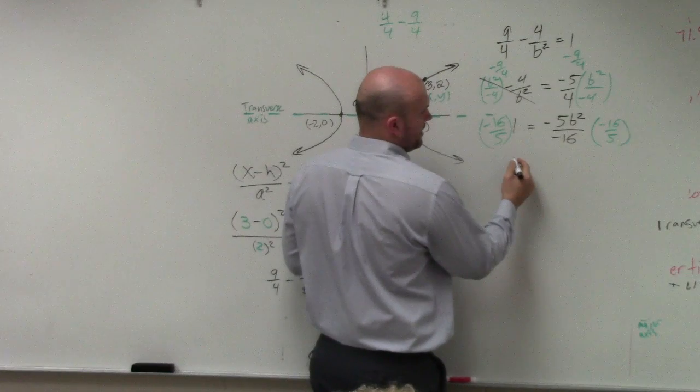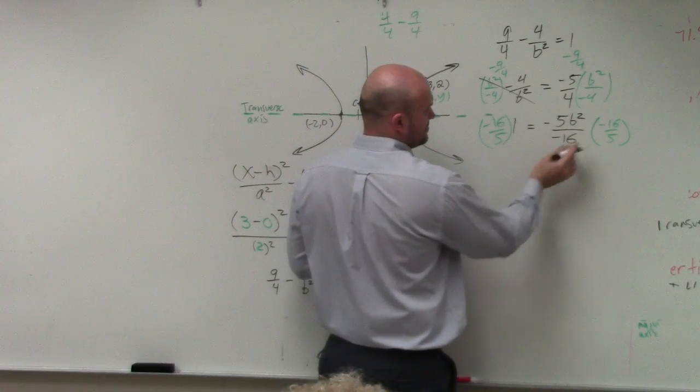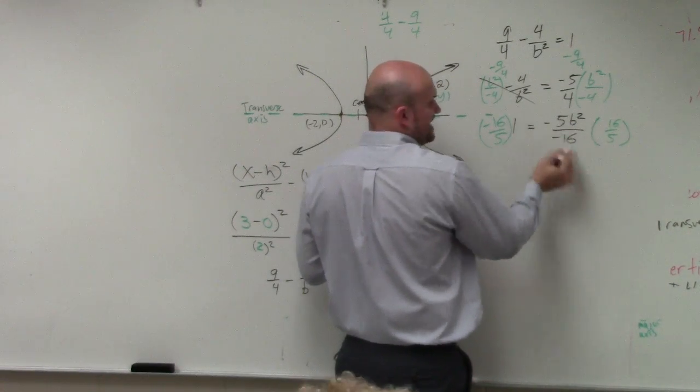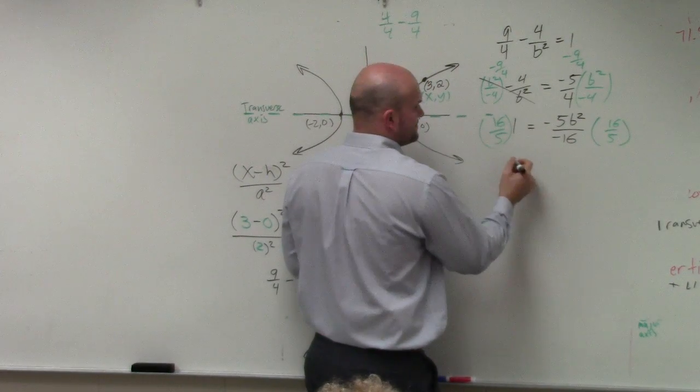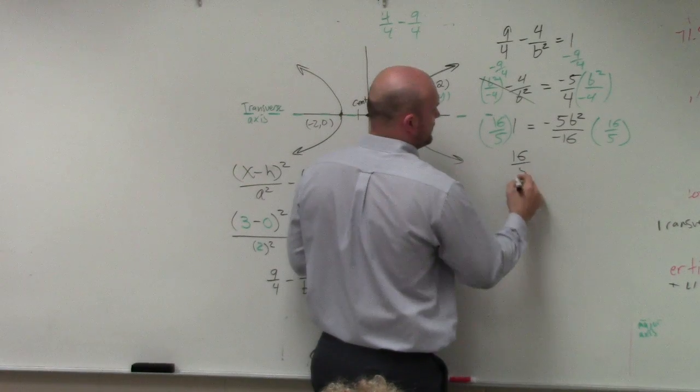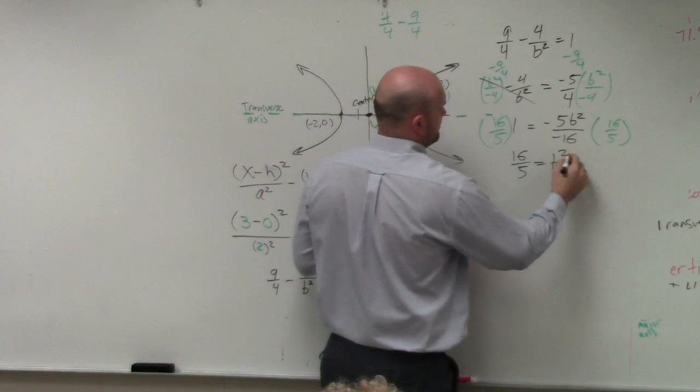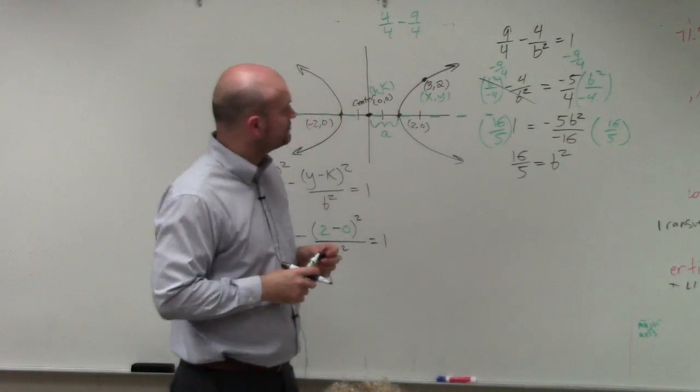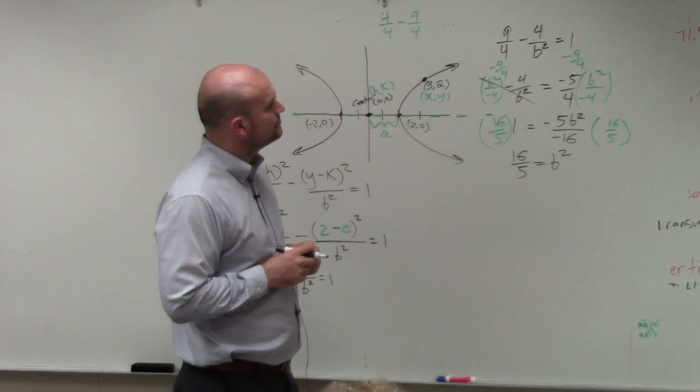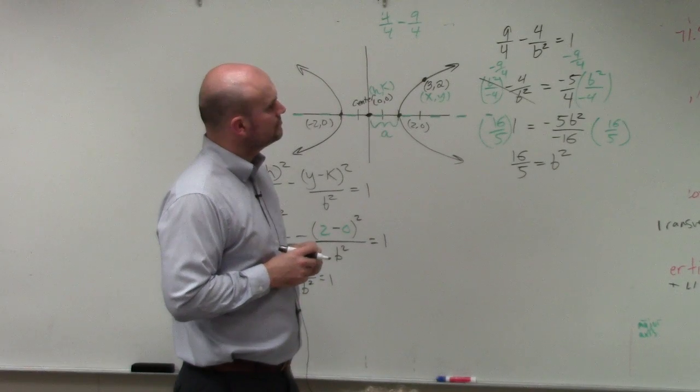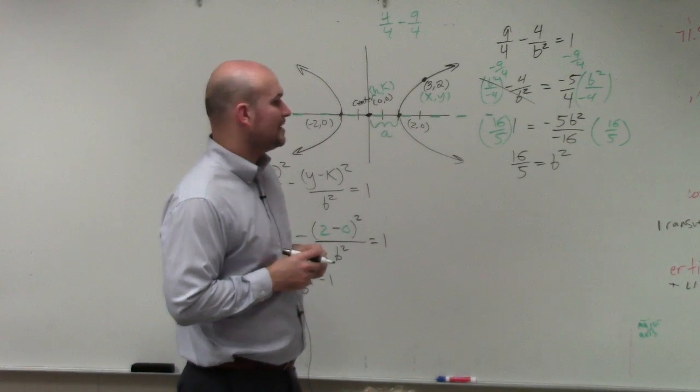Now, to solve for b, I can just multiply by the reciprocal of this, which is a negative 16 over 5. If you guys would have done the cross product, you would have got the exact same answer. And therefore, what I have here, wait, those divide out. Sorry. That divides to a positive, right? Negative divided by negative, positive. So therefore, I have 16 over 5 equals b squared.